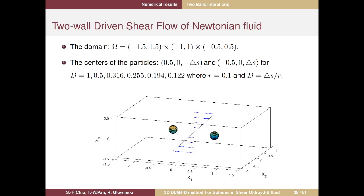We use this domain and control the initial positions with six different vertical displacements delta-S divided by R. R is fixed at 0.1. We want to see what kind of particle interactions occur — perhaps passing, return, tumbling, or something else.